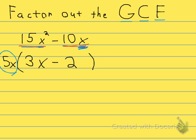You can always check this by multiplying it back out. If you multiply this back out, you would get 15x² minus 10x, which is what you started with.